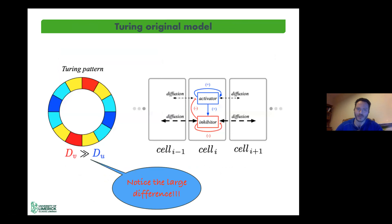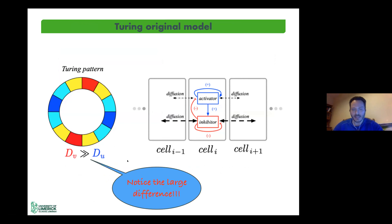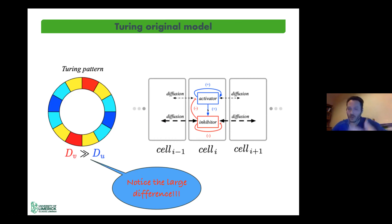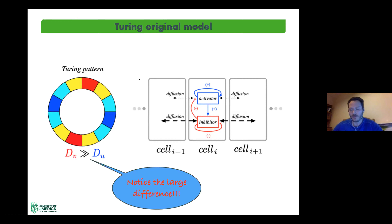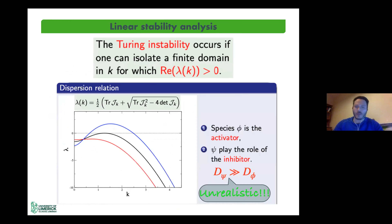Following a linear stability analysis of this set of equations — the Turing mechanism — starting from a ring of cells, the key factor is that the model requires a considerably large ratio of diffusion constants between the inhibitor and the activator. The activator activates the growth of both chemicals while the inhibitor plays the opposite role. The dispersion relation is a function of k, the wave number, and the eigenvalues of the linearized spatially extended system are plotted as a function of k.